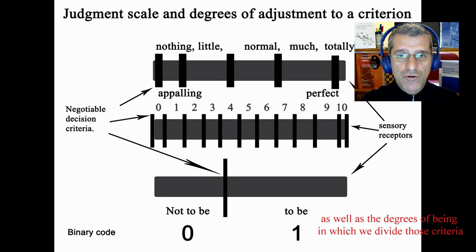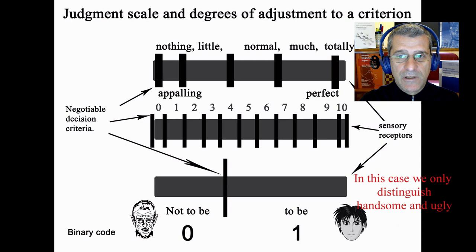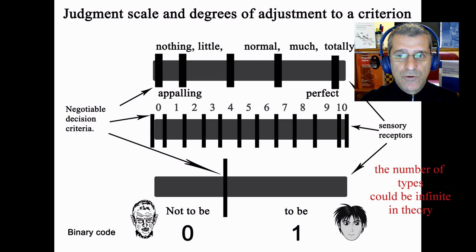In this case, we only distinguish handsome and ugly. But for nothing handsome to perfectly handsome, the number of times could be infinite in theory.